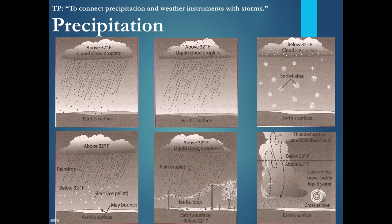For freezing rain, it falls as rain droplets and the cloud and atmosphere is above 32 degrees Fahrenheit. However, the ice builds up on telephone poles, wires, and the Earth's surface, which are below 32 degrees Fahrenheit. Freezing rain is one of the worst hazards because of black ice.